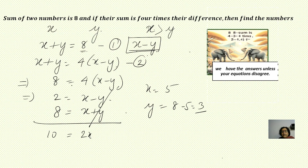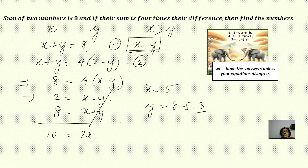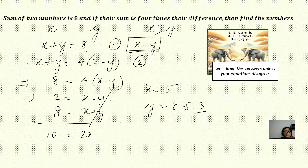Alternatively, you can simplify x plus y equals 4x minus 4y, get two different equations and solve them that way. Or you can use substitution — put y in terms of x or x in terms of y in either equation. There is no fixed rule that you have to use this particular method only, but this is the easiest option here.